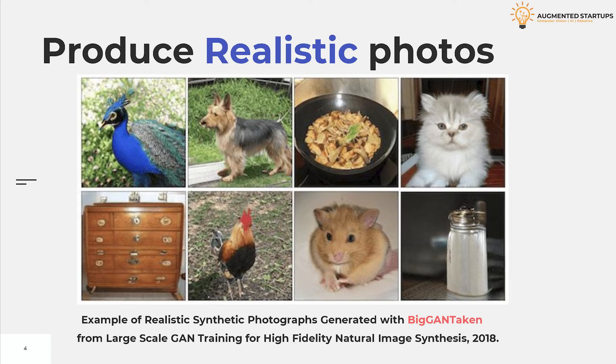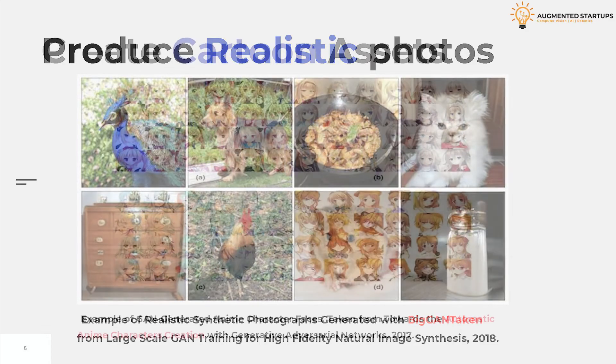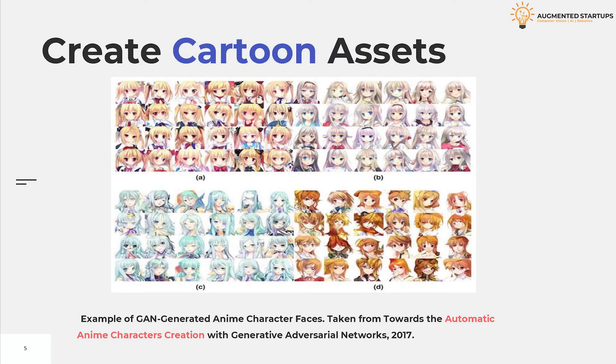The figures shown here are synthetic images generated using BigGANs. GANs can also be used to create cartoon assets. These are examples of GAN-generated anime character faces, demonstrating the training and use of GAN for generating faces of anime characters — Chinese comic book characters. Inspired by anime examples, a number of people have tried to generate Pokemon characters, such as the PokéGAN project and the generate Pokemon with DCGAN project.